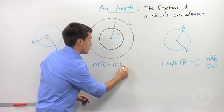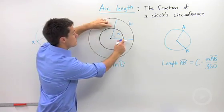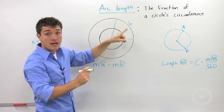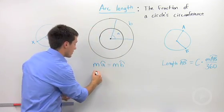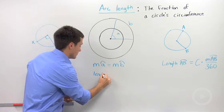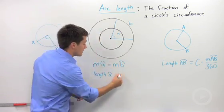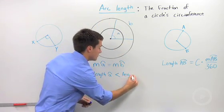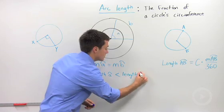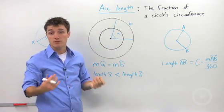But if we look at the distance between the intercepted arc's endpoints, we can see pretty clearly that the length of arc A is definitely smaller than the length of B. So it is possible for two arcs to have the same measure but different lengths.